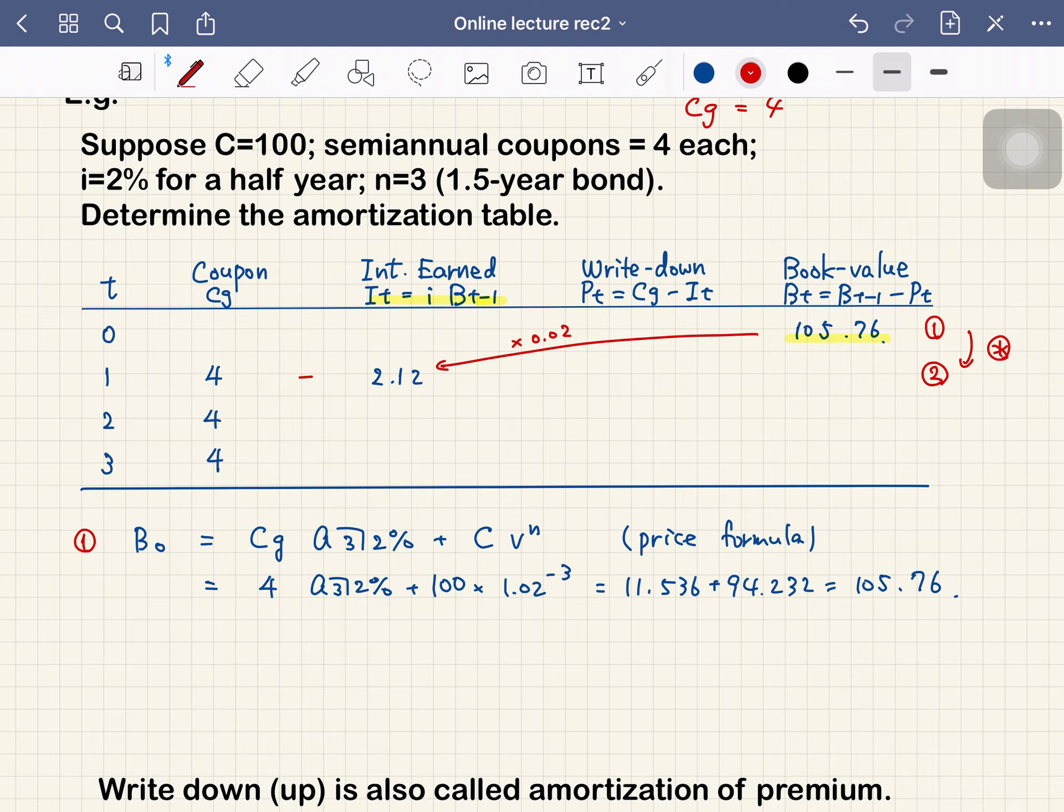We can continue this. We multiply 2% by this number to get 2.08. We subtract to get 1.92. The book value is decreased by 1.92, giving 101.96.